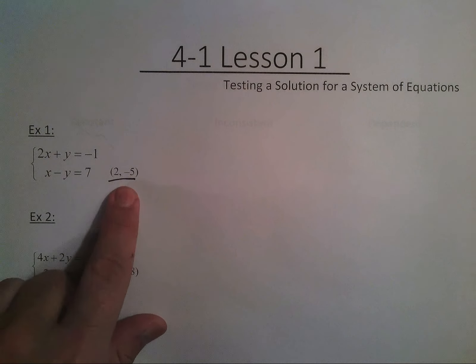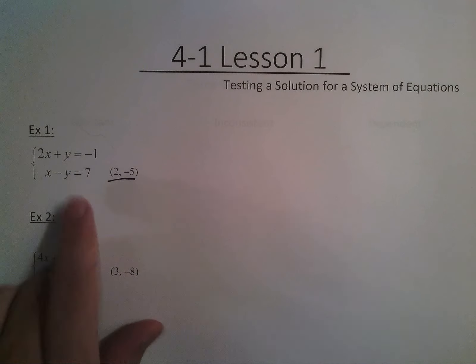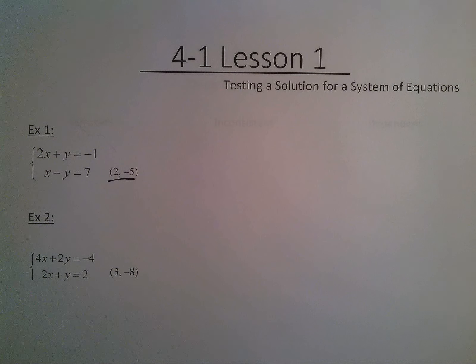So we're literally just going to plug in this x and this y into the equations. So we have the equation 2x plus y equals negative 1 and a second equation x minus y equals 7. We're going to plug in the value 2 comma negative 5 for x and y respectfully and see what we get.